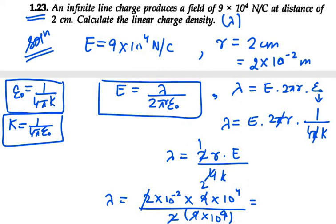So 10^2 / 10^9 can be written as 10^-7, and this will be in coulomb per meter.